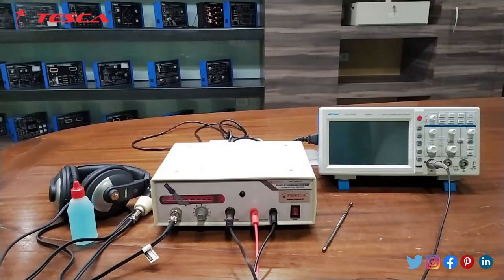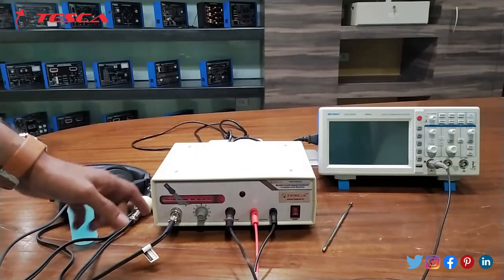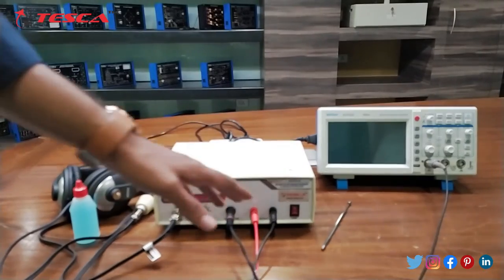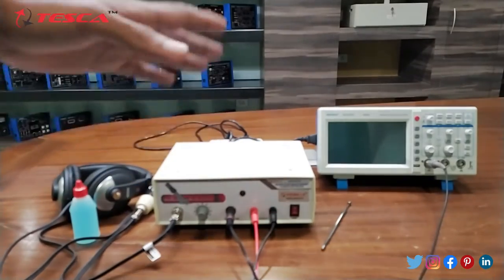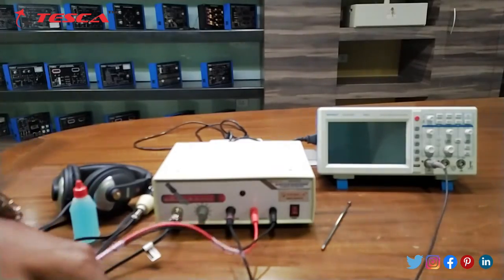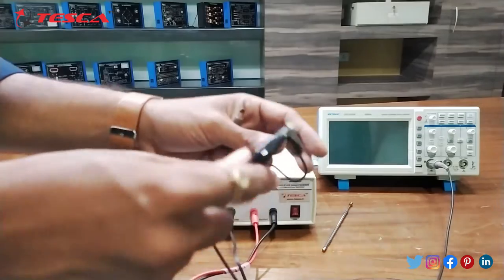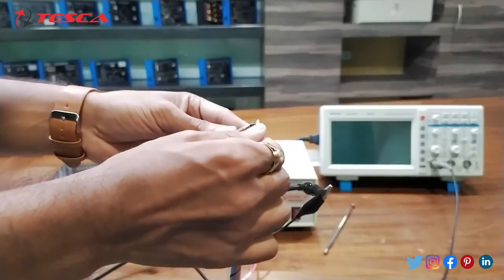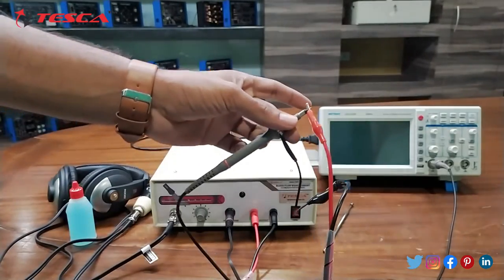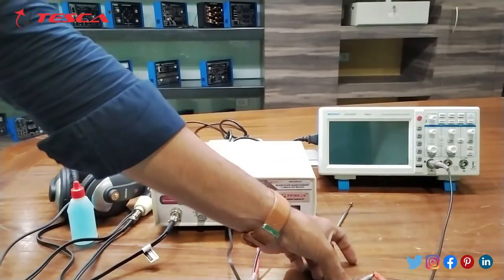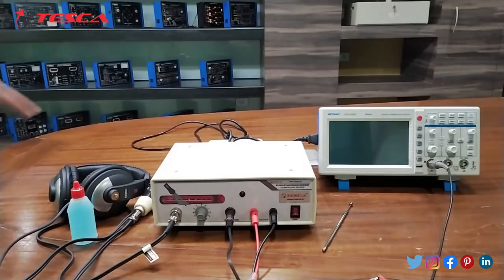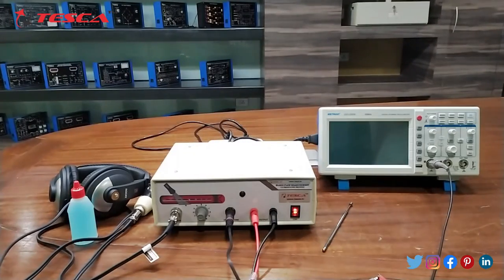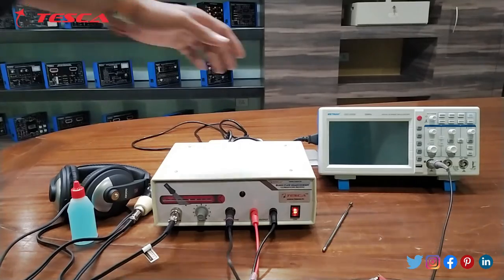Now let's talk about the working of this kit. First of all we will connect this transducer to the kit. Then we will connect this headphone to the kit. Then there are two patch cords which we will use to connect the DSO to this kit. The black color patch cord is connected to the black wire of the DSO and the red one is connected to the other wire of the DSO like this. Then we will switch on the apparatus from this button. Now our apparatus is ready to work. Now we will switch on the DSO also.